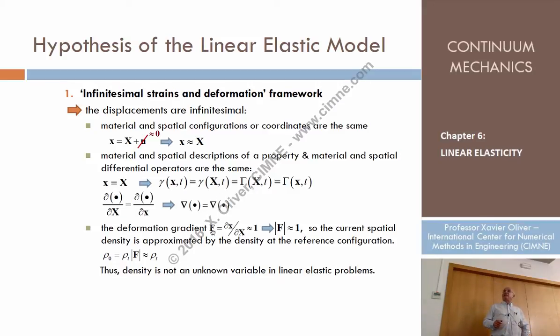Another question is that the deformation gradient, which is the basis for the strain, is assumed not exactly one but close to one. The spatial and the material coordinates are very similar because displacements are very small. So f is not one but close to one, right? We already discussed that.